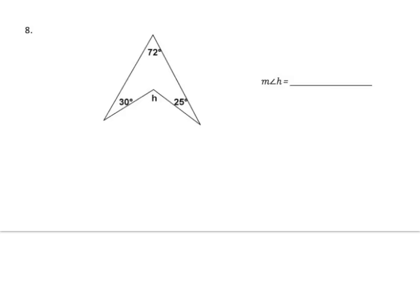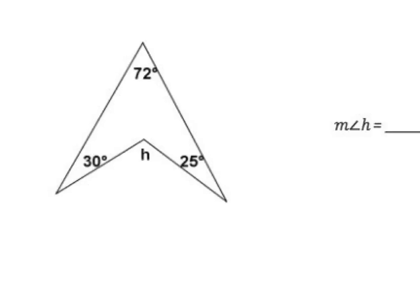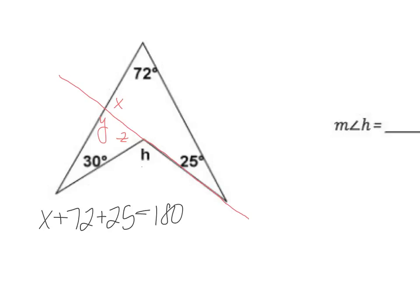I'm going to draw an auxiliary line here — I need triangles, so this isn't like the auxiliary lines for parallel lines. I'll make a small triangle. First I'll find x using the interior of this triangle: x plus 72 plus 25 equals 180, so x equals 83 degrees. Then a linear pair: 83 plus y equals 180.